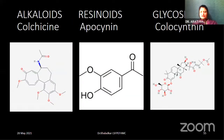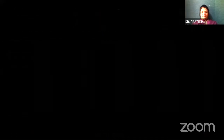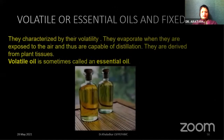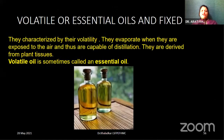These are just the chemical structures of alkaloids, resinoids, and glycosides, so that you will know the chemical structures in which they are represented.